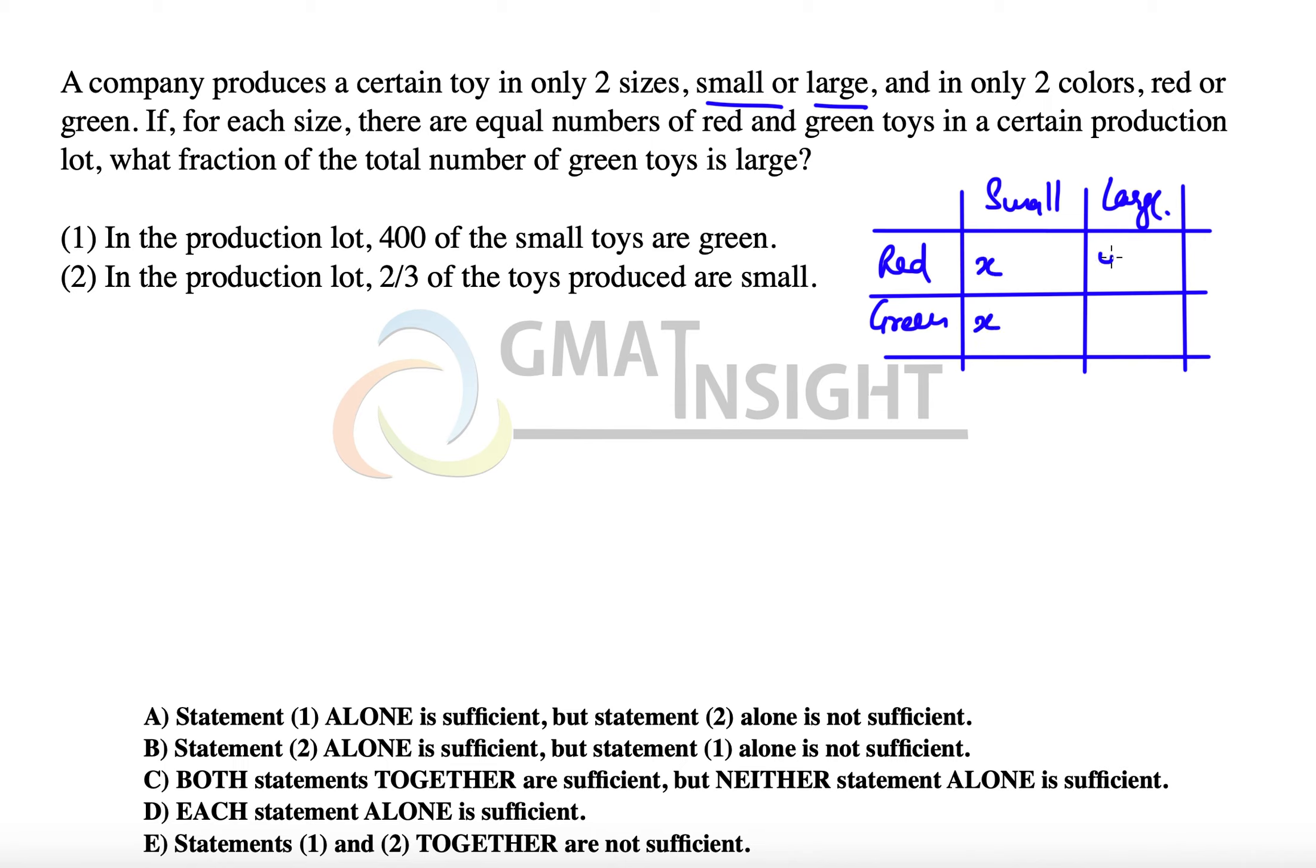then we have x green. If we have y red in the large category, then there will be y green as well. That is the meaning of there are equal numbers of red and green toys in a certain production lot.